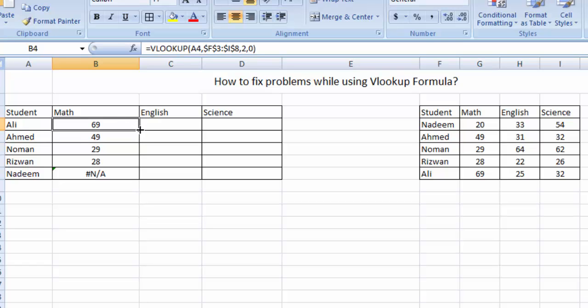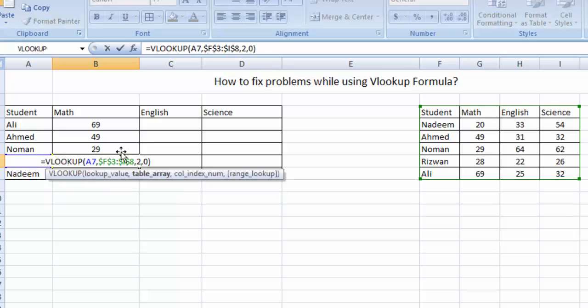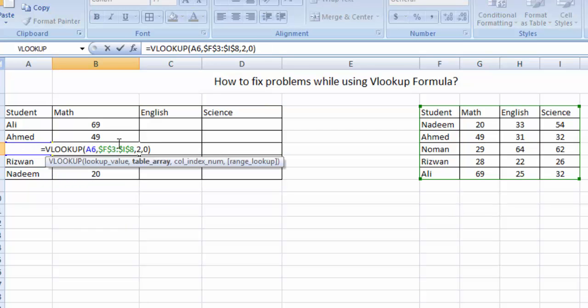Now friends, if we move down, the problem is fixed. Now if we check this one, you can see that the range is perfect for this, also for this, also for this, and so on.